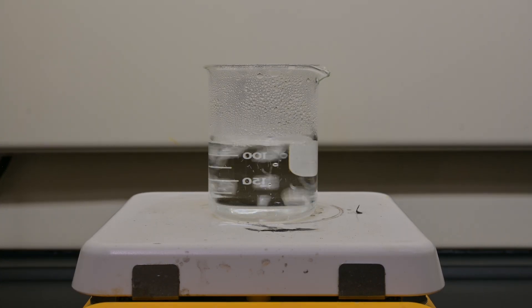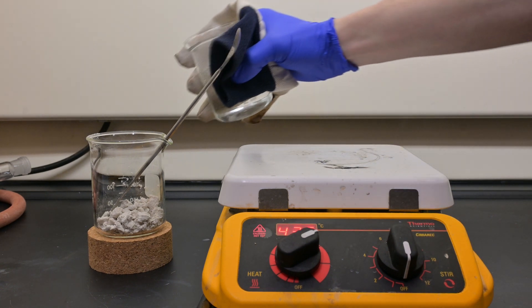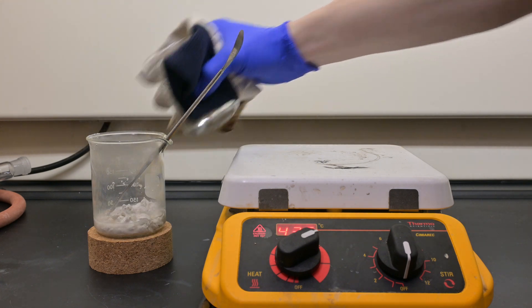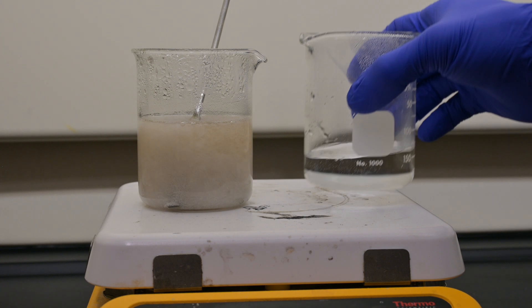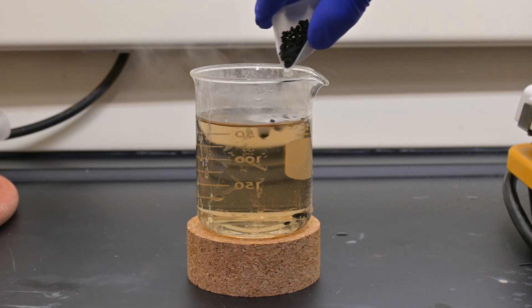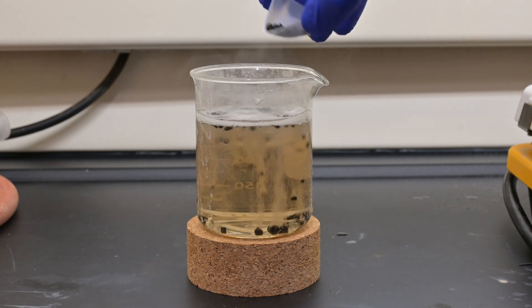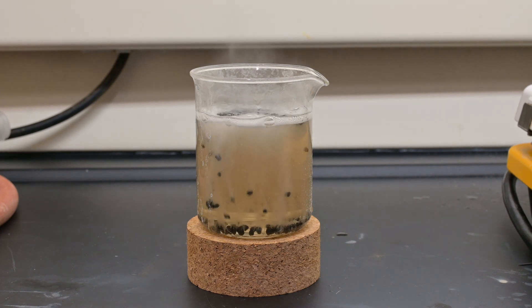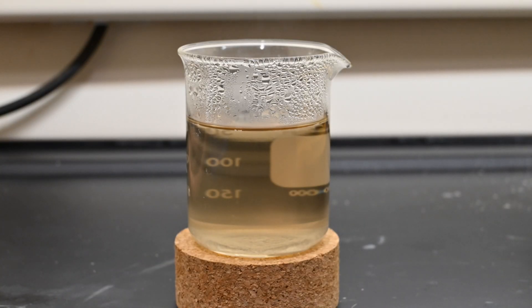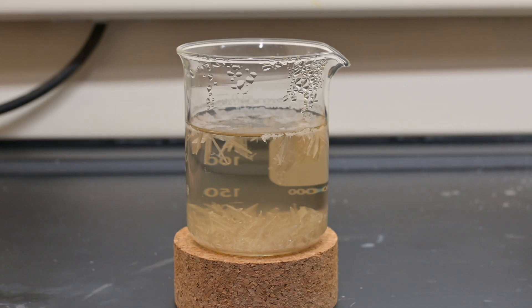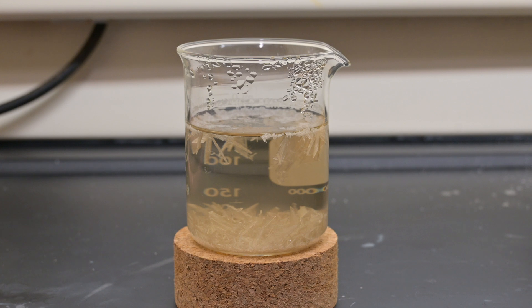To further purify our product, we dissolve the crude sulfanilic acid crystals in just enough water to achieve a clear solution. Then add 2 to 3 grams of decolorizing carbon. After that, we allow the solution to cool to room temperature. I like to set it on a ring cork to allow it to cool slower than it would on the bench. This leads to larger crystal formation.